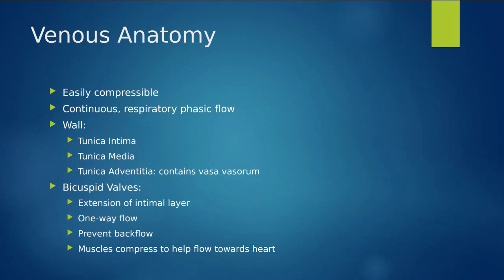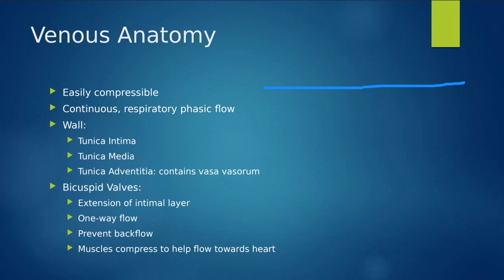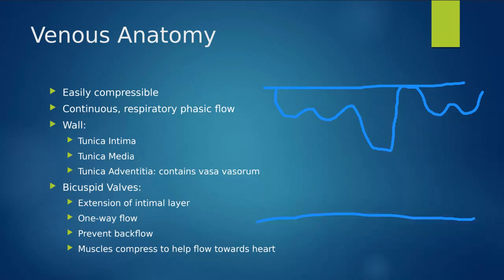The veins also display continuous respiratory phasic flow, so that blood flow will continue to be uniform. We'll see those changes when the patient takes a breath in, holds their breath, or blows it out. We're going to see waveforms below the baseline. When we have arterial waveforms, we get that rhythmic arterial pulse, and no breathing or gravity is going to affect that.